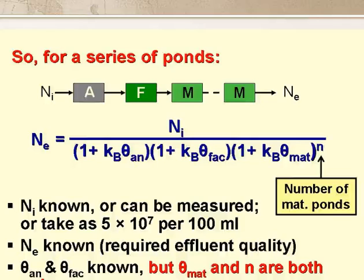NI is either known or taken as, for example, 5 times 10 to the 7 per 100 ml. NE is known, as it's the final effluent quality we need. At this stage in the design, we will have already designed the anaerobic and facultative ponds, so the retention times in these — theta-an and theta-fac — are also known.